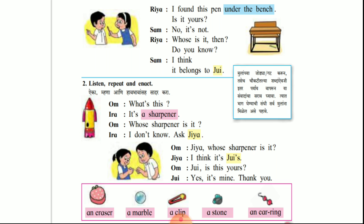Students, a sharpener ahe. Pudil vasthunchi English nawe prun. An eraser. A marble. A clip. A stone. An ear rings — kanatle dhul. Eraser manje khod rubber. Marble manje goti. Clip manje chaapkiwa clip. A stone manje dhagad.